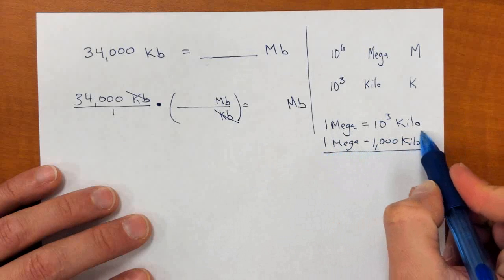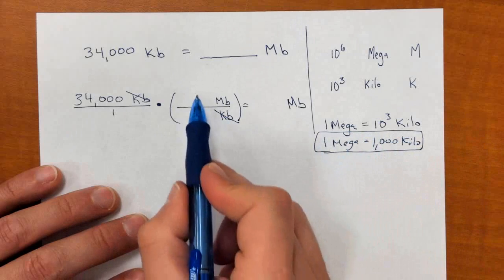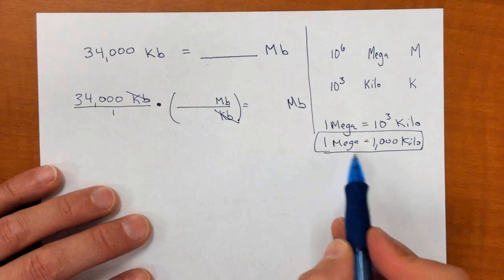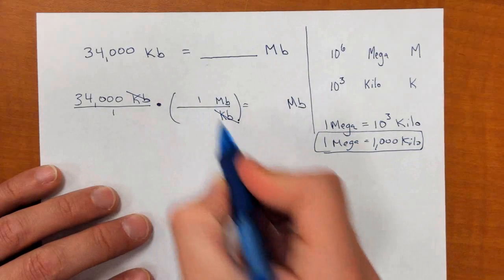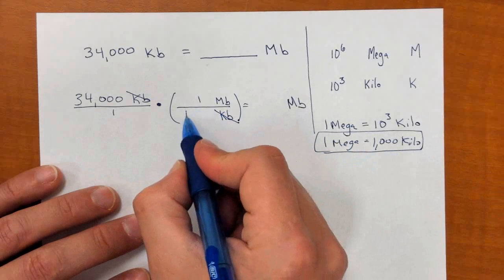Here's an equivalency statement to help us understand what the numbers are that go here. So one megabyte is equal to one thousand kilobytes.